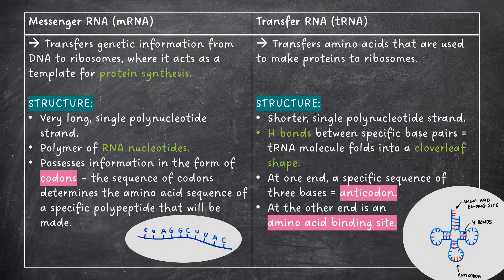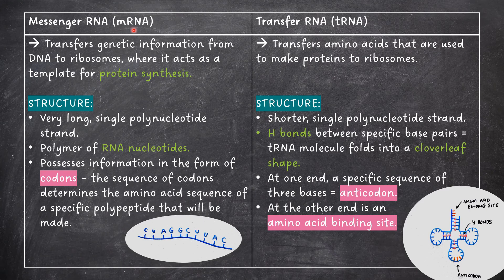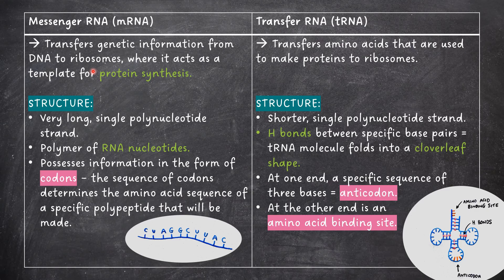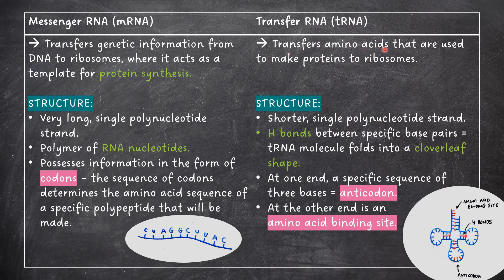There are two types of RNA that are important in protein synthesis. mRNA which stands for messenger RNA and tRNA which stands for transfer RNA. mRNA transfers genetic information from the DNA to the ribosomes where it acts as a template for protein synthesis. tRNA on the other hand transfers amino acids that are used to make proteins to the ribosomes.